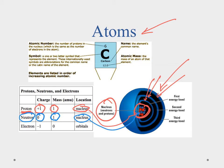Then we have our electrons. The electrons have a negative one charge. Their mass is 1/1874th of a proton, so they're really negligible. These are the ones we find in the energy levels, or orbitals.